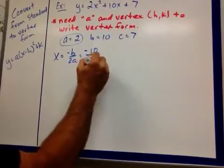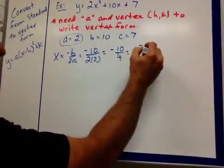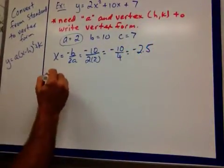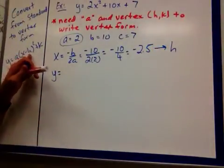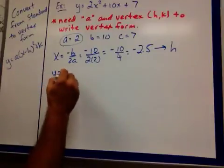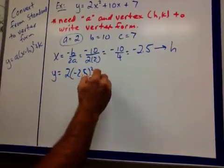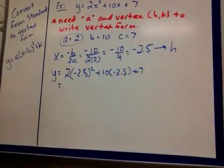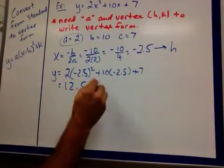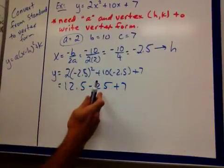Negative 10 over 4, which is negative 2.5. I know the y coordinate. And this would be my h as far as my equation goes, because h is the x coordinate of the vertex. Why? Let me plug in here. 2 times negative 2.5 squared plus 10 times negative 2.5 plus 7. 2.5 squared is 6.25 times 2 is 12.5 minus 25 plus 7.